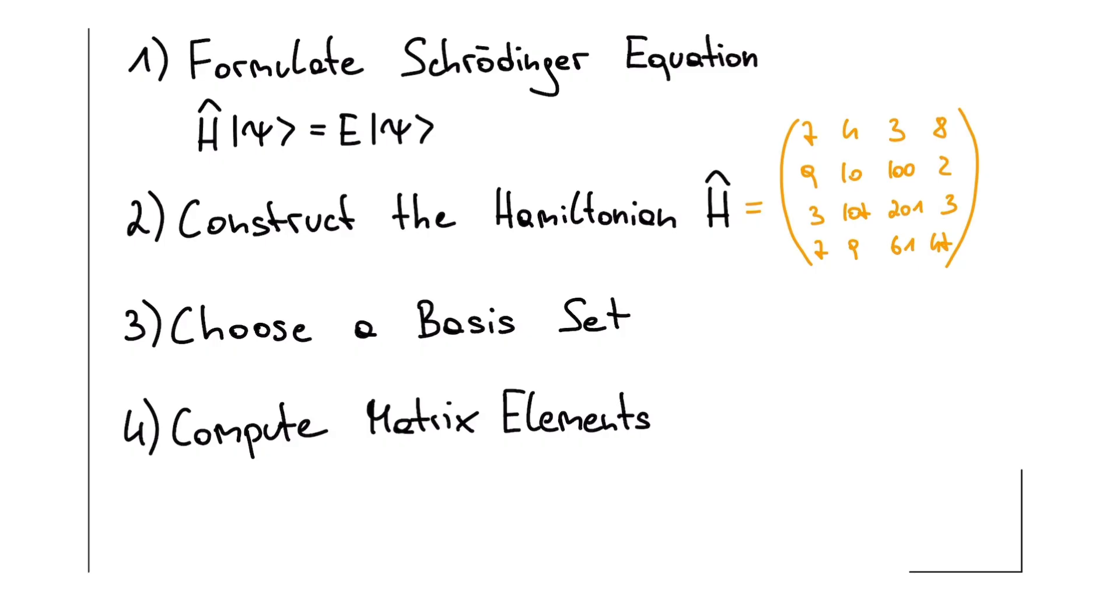This is exactly what the Hamiltonian operator does in quantum mechanics. It takes a state, our state vector, and tells us how this state changes according to the physical laws of the system, which include kinetic and potential energy. At the moment, however, the Hamiltonian is still just an abstract operator. So we now translate it into a matrix representation, which allows us to work with our state vectors using the familiar tools of linear algebra.